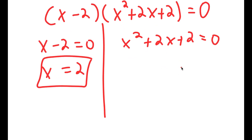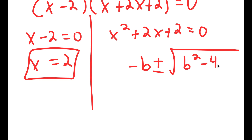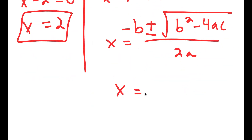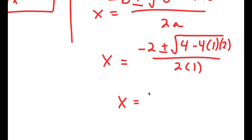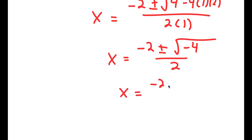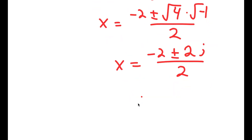For x squared plus 2x plus 2 equals 0, we use the quadratic formula: x equals negative b plus or minus the square root of b squared minus 4ac, all over 2a. So x equals negative 2 plus or minus the square root of 4 minus 4 times 1 times 2, all over 2. That gives negative 2 plus or minus the square root of negative 4 over 2, which equals negative 2 plus or minus 2i over 2, giving x equals negative 1 plus or minus i.